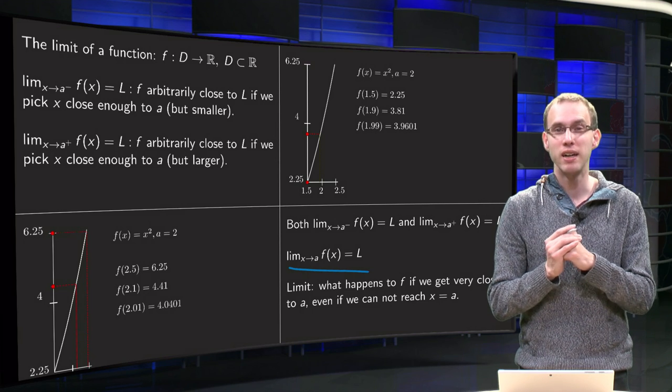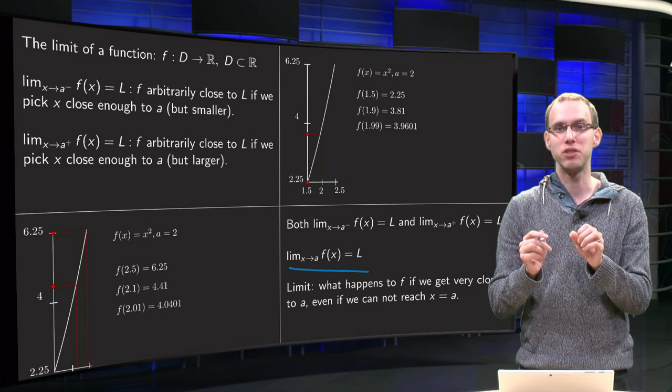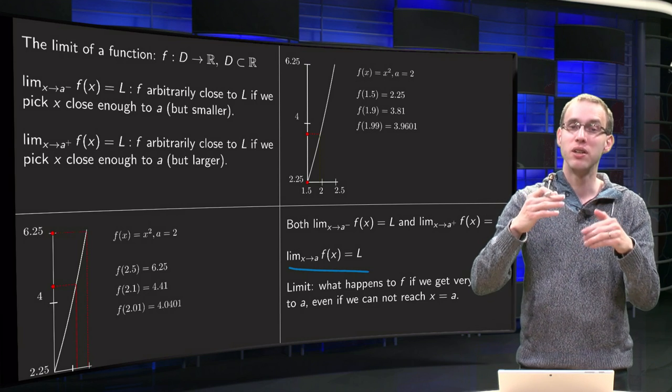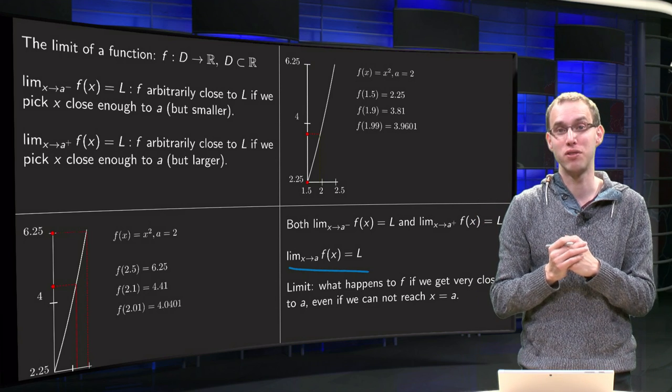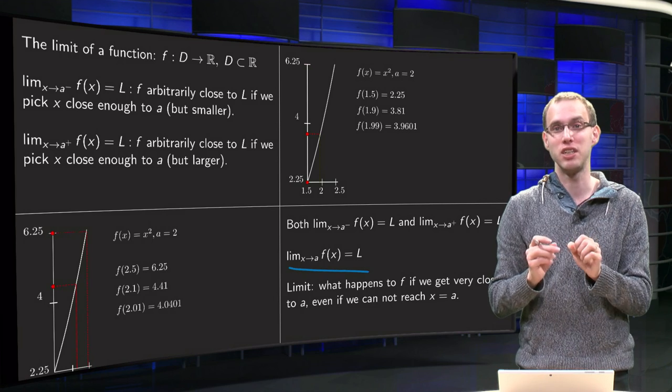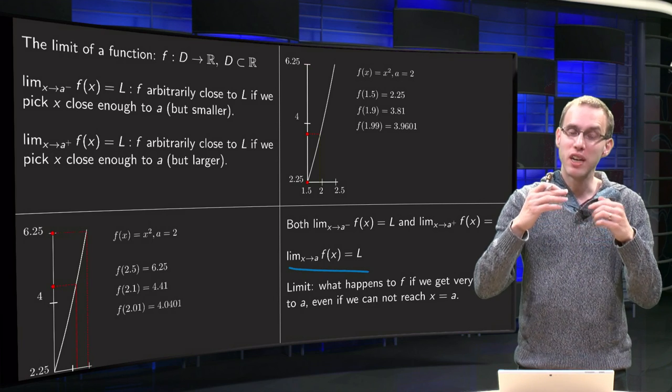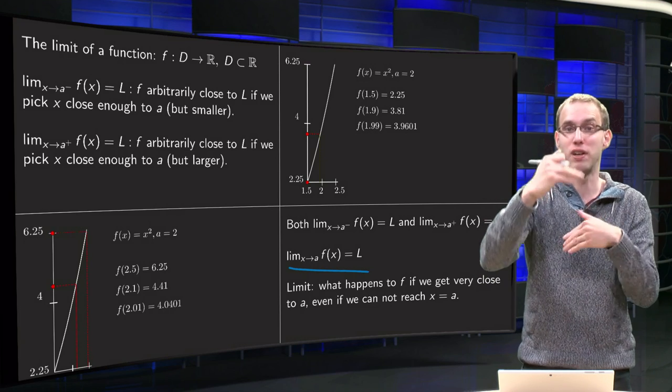So the crucial part here is that we get information at the point x equals a, using information of points x in the neighborhood, in the vicinity of x equals a, but we do not come actually at the point x equals a. No, we stay away from x equals a.